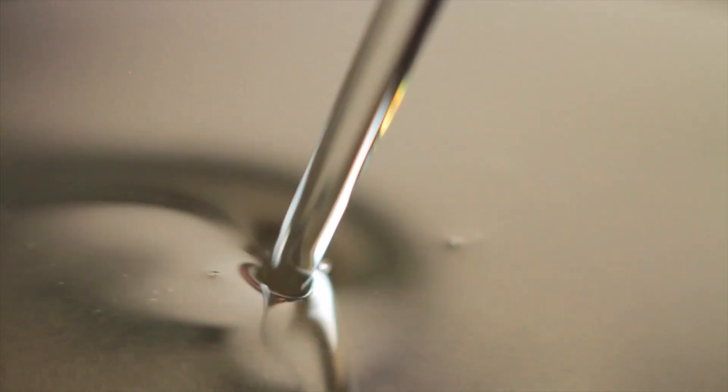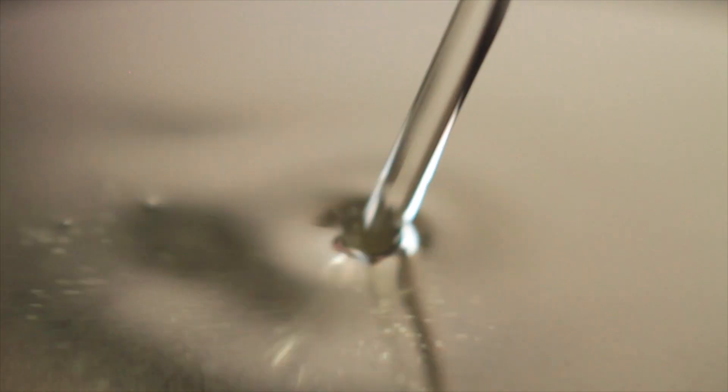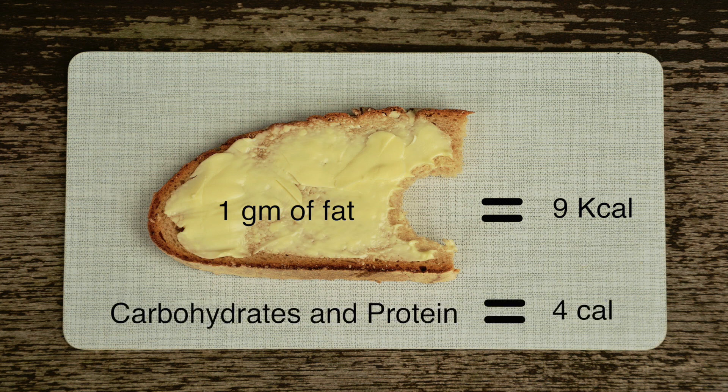Vegetable oils are an important ingredient in cooking and also an important source of dietary energy. A gram of fat gives about nine kilocalories, versus just four calories from carbohydrates and protein — the other two energy-giving nutrients.